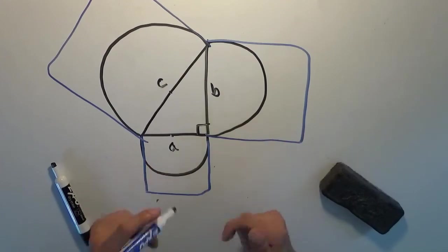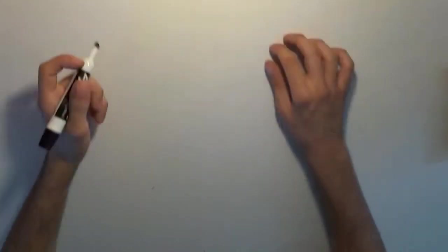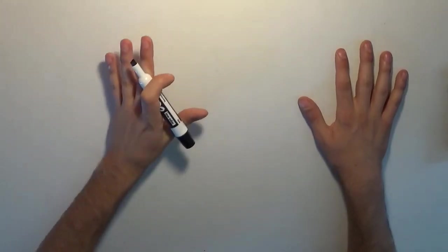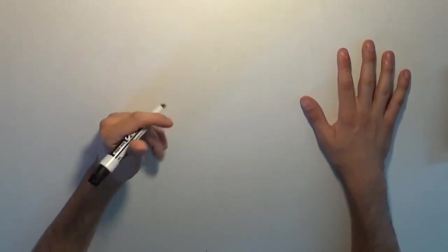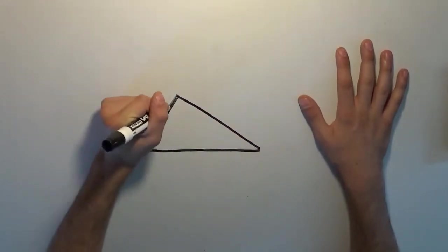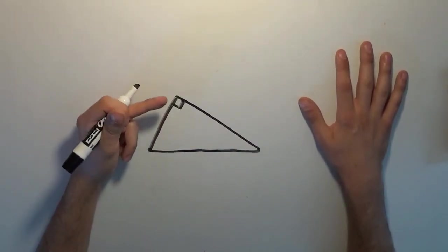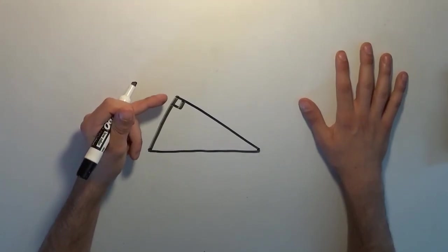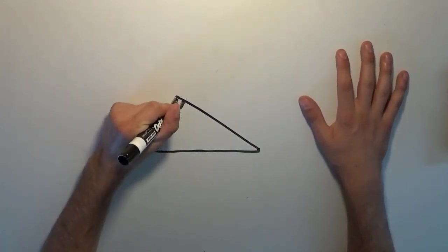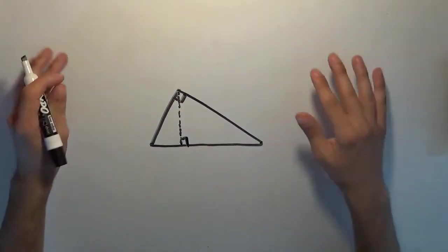This leads us to the second proof of the Pythagorean Theorem, thanks to everyone's favorite German fellow, Albert Einstein. He recognized something really interesting based on what I just explained about similar shapes. I'm going to draw a right triangle sitting on its hypotenuse, and I'm simply going to draw what's called an altitude from the right angle. An altitude is a line segment within a triangle going from a vertex perpendicularly toward the opposite side. And that's the proof — QED.